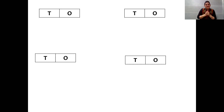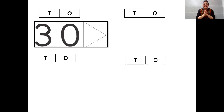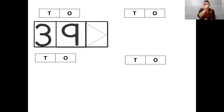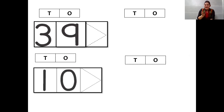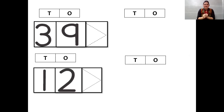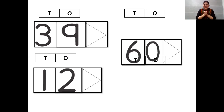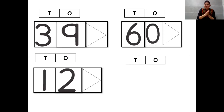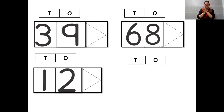Now let's see which number is on the tens place — number three. And now the number nine will come in ones place. Now let's see which number — it's 12. So one ten and two ones makes 12. Now quickly check the next number — it's 60. So six tens. And eight ones — that means 68.